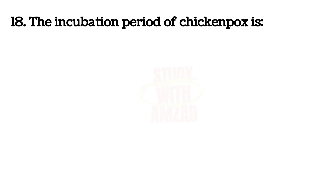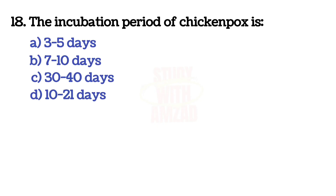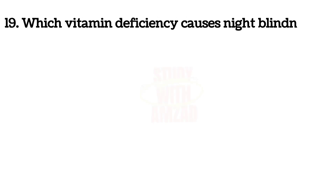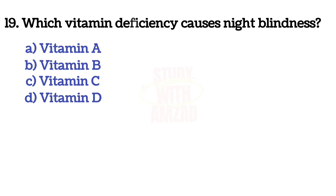Next question: The incubation period of chickenpox is? The answer is D — 10 to 21 days. Next question: Which vitamin deficiency causes night blindness? The correct answer is A — vitamin A.